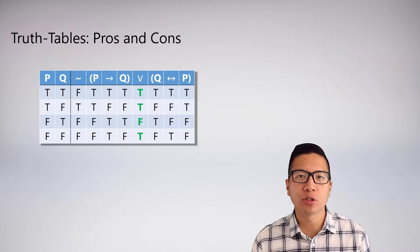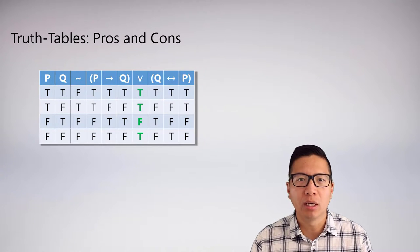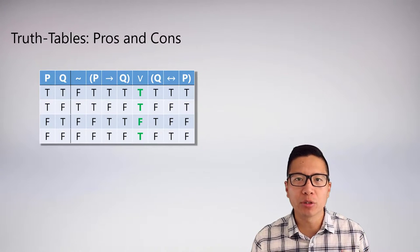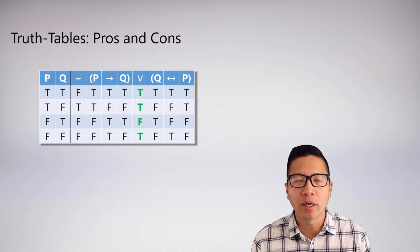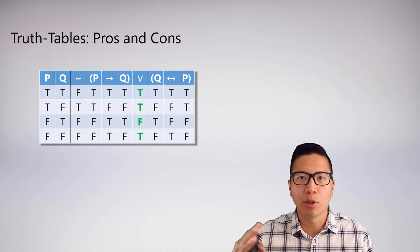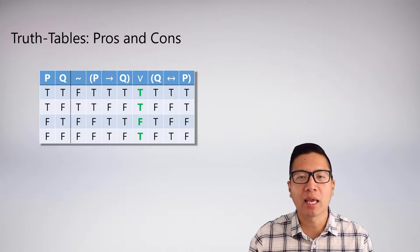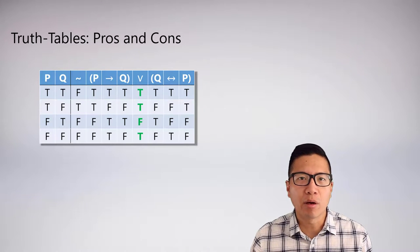As we've seen, truth tables are a really nice tool to have in order to assess semantic properties of statements, arguments, and so on. There are a lot of advantages to truth tables, the main advantage being that they're actually quite easy to do. Once you know how to set it up, it's very easy to set up all your rows and columns, and then you can just mechanically go through and evaluate the truth.